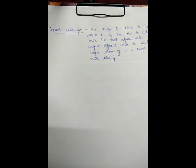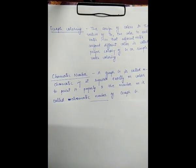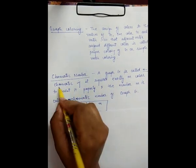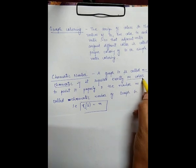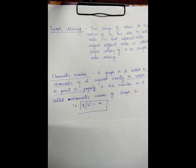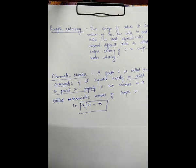We paint the n vertices of a graph using a concept called the chromatic number. A graph G is called m-chromatic if it requires exactly m colors to paint it properly — meaning no two adjacent vertices have the same color. G cannot be painted properly with less than m colors, and the number m is called the chromatic number of G. So m is the minimum number of colors used to paint a graph properly, with the condition that no two adjacent vertices have the same color.